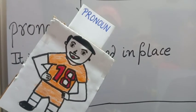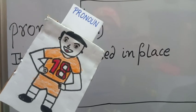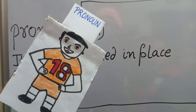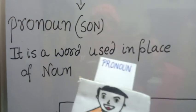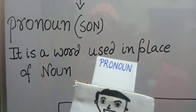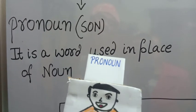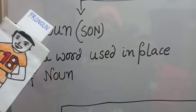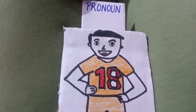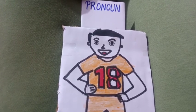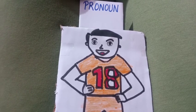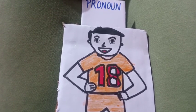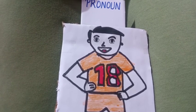I am Pronoun. I am the son of Mr. Noun and Mrs. Verb. I love my father Mr. Noun very much and do all his work in his absence. When father is busy doing some work, his son always holds the responsibility of doing that work. This is what Pronoun does. It is a word used in place of a noun. For example: Ram is playing football. Ram's brother is reading a book. In this sentence, instead of repeating Ram a second time, we use the pronoun 'his' — Ram is playing football, his brother is reading a book.